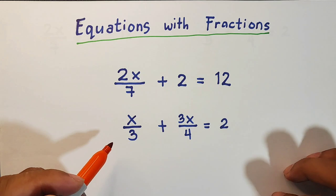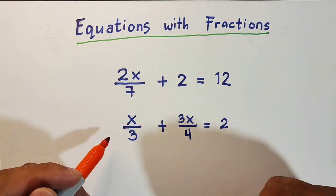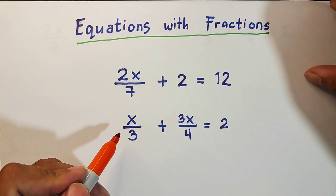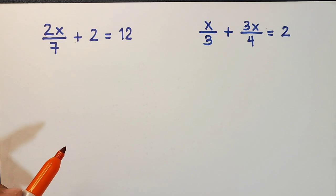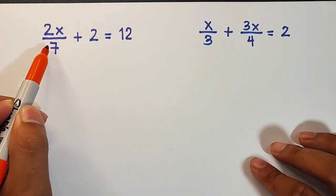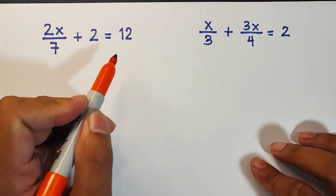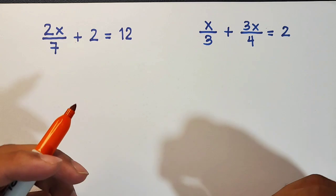So let's try solving these two equations. We have here 2x over 7 plus 2 is equal to 12. So the question here: what is the value of x that will make this whole part of the equation equal to 12?